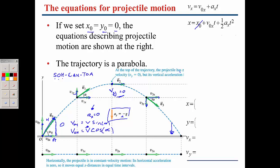Knowing that x₀ is equal to zero and the acceleration in the x-direction is equal to zero, we can simply write the x-position as v₀x multiplied by time. There is no acceleration in the x-direction, so the velocity in x is simply v₀x, which is totally independent of time.